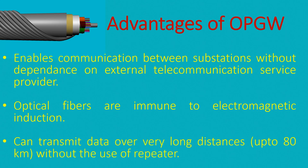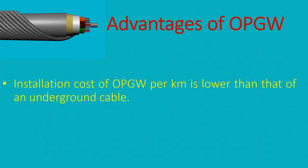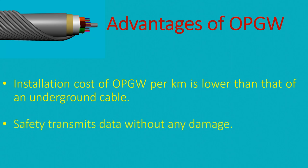OPGW can transmit data over very long distances, up to 80 kilometers, without requiring the use of repeaters. The installation cost of OPGW per kilometer is lower than that of an underground cable.